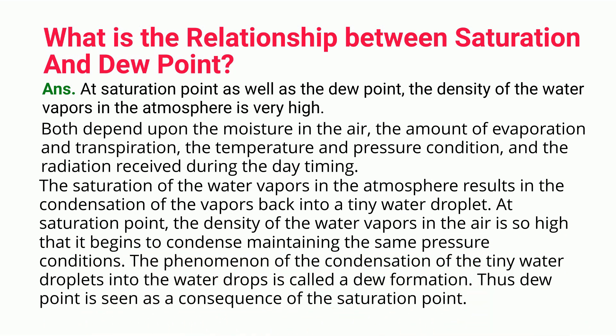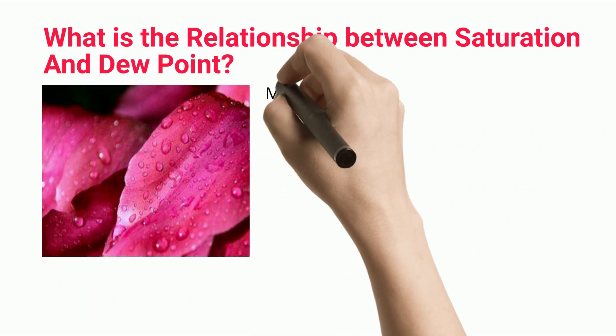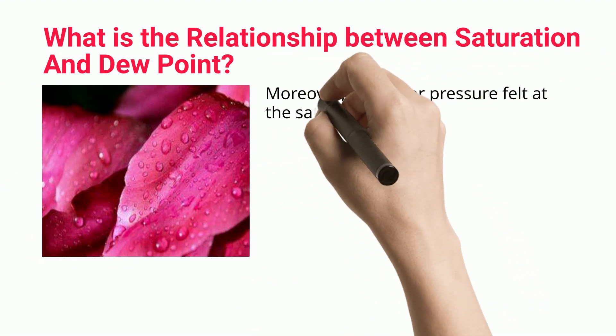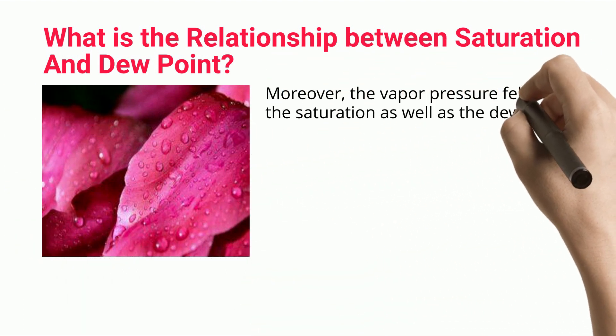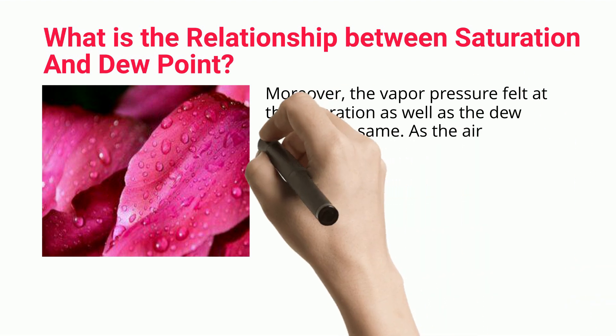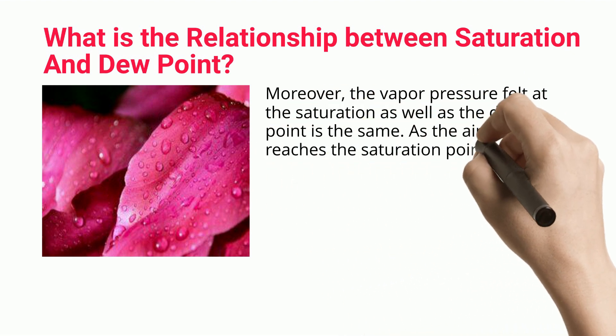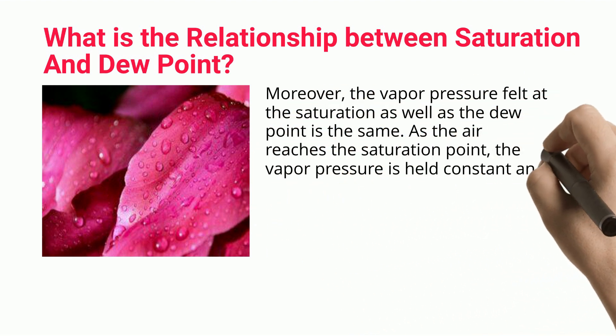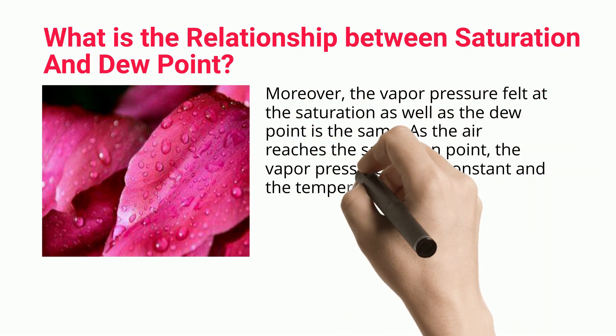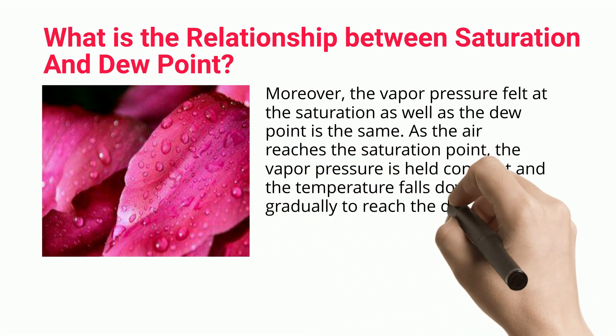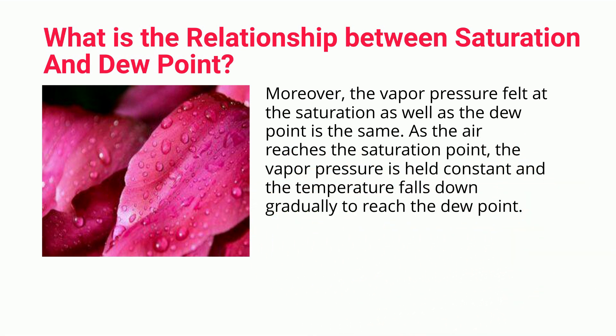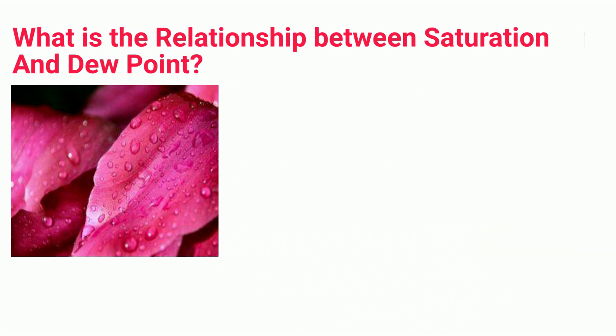The phenomenon of condensation of tiny water droplets into water drops is called dew formation. Thus, the dew point is seen as a consequence of the saturation point. Moreover, the vapor pressure at both the saturation point and dew point is the same. As the air reaches the saturation point, vapor pressure is held constant and temperature falls gradually to reach the dew point.